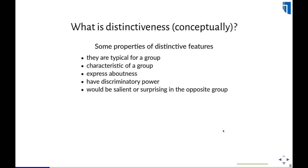These are some ways of approaching the concept of distinctiveness, and there's actually very little research on this because in computational linguistics people tend to jump directly into the statistical definition. They propose a measure, but if you don't distinguish the conceptual understanding of what you're aiming at from the statistical algorithm that implements your measure, then you have no way of evaluating your measure — because your measure by definition will produce the truth. If you do distinguish between the conceptual level and the implementation, then you can start seeing how different measures perform with respect to a certain conceptual standard.